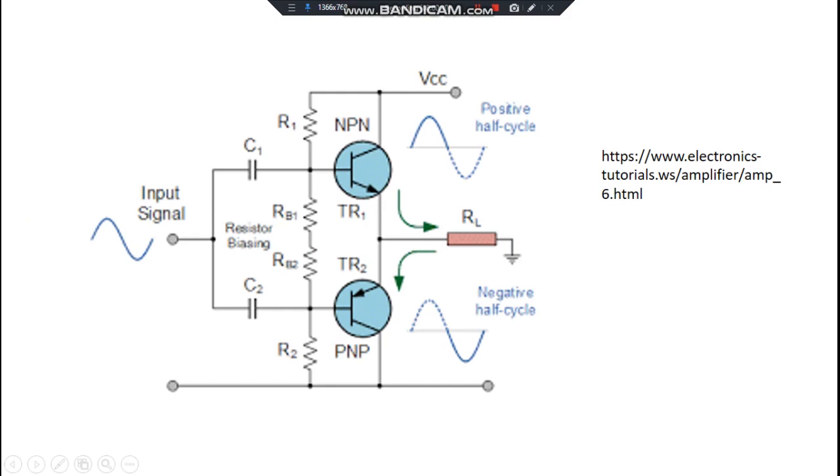That means one of the transistors conducts or amplifies for one half of the cycle, and the other half amplifies for the next half cycle. This would be much clearer in this diagram. We give an input signal which is to be provided across the base for the transistors which are connected this way.